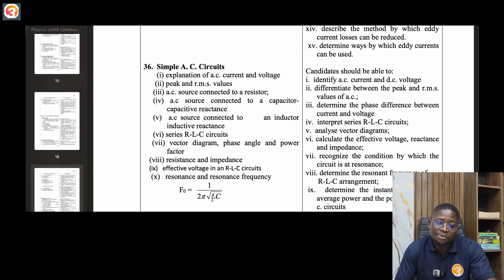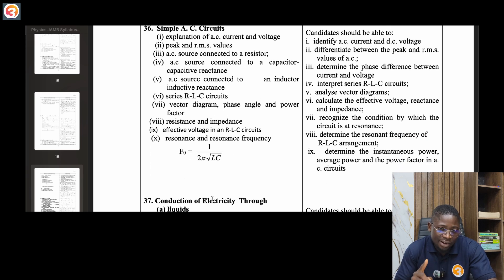Thirty-six, simple AC circuits. Explanation of AC current and voltage, peak and RMS values, AC source connected to resistor, AC source connected to capacitor, capacitive reactance, AC source connected to an inductor, inductive reactance. Series RLC circuits, vector diagram, phase angle and power factor, especially power factor. Resistance and impedance, effective voltage in RLC circuits, resonance and resonance frequency.